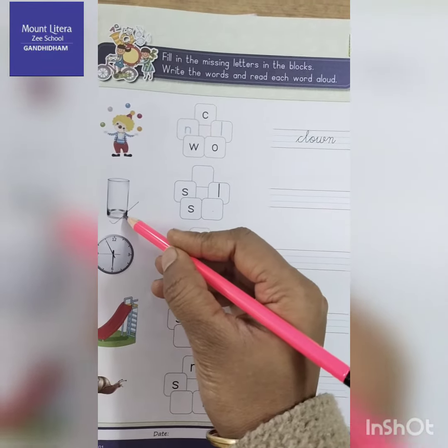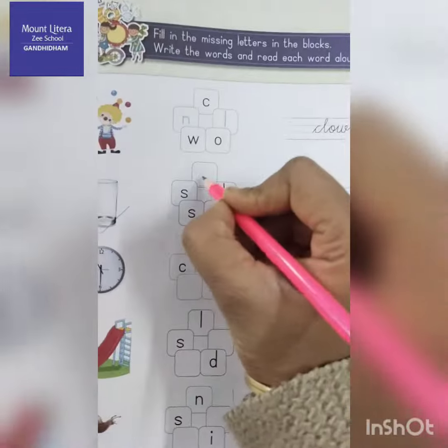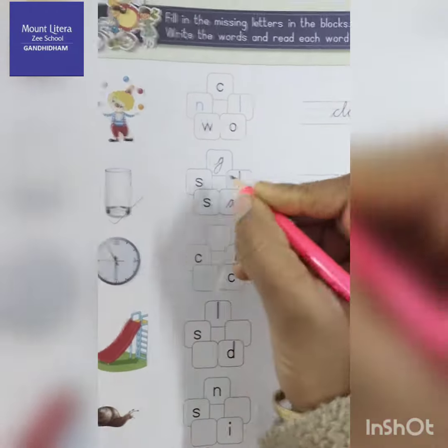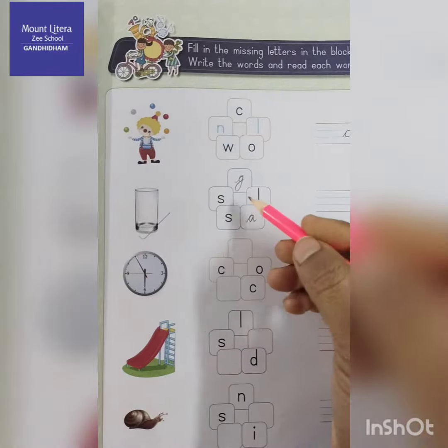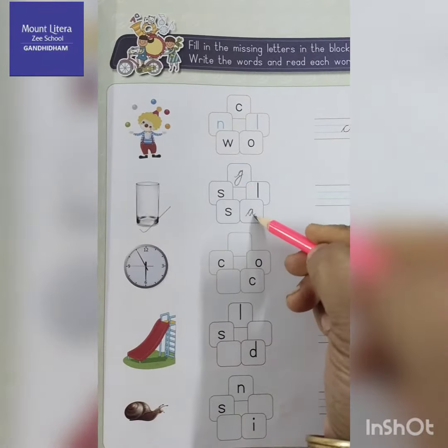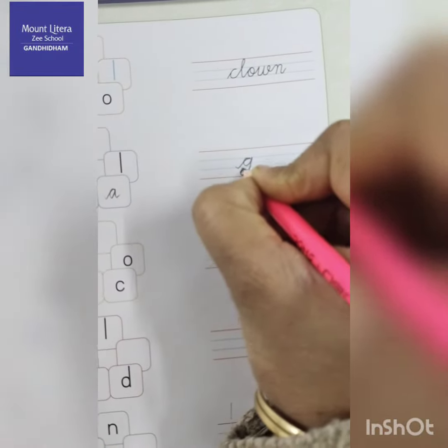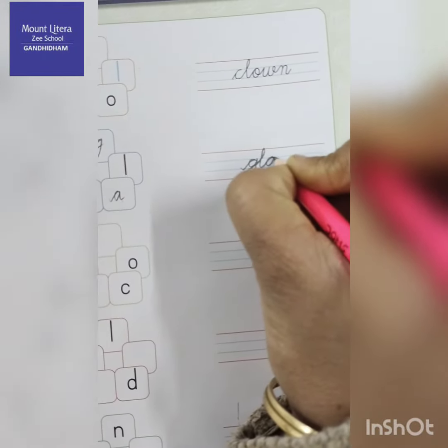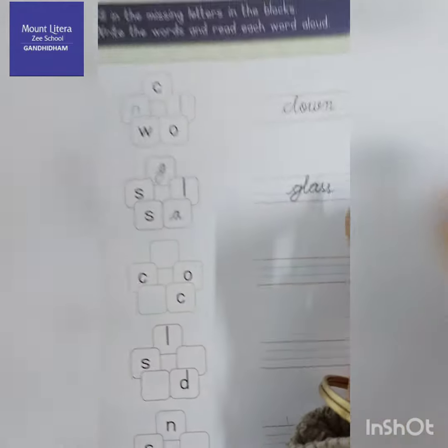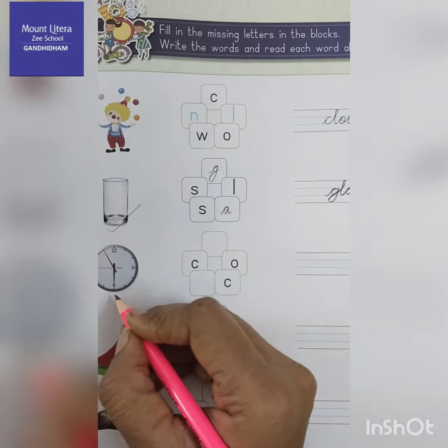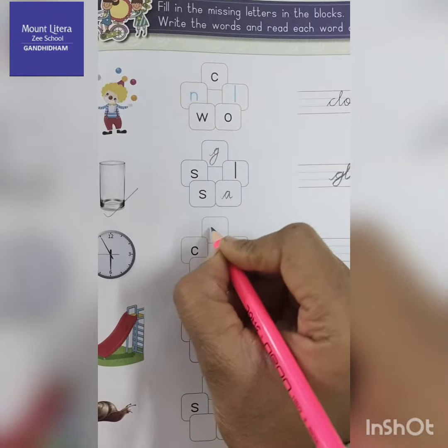The second one is glass. Glass. What is the spelling of glass? G-L-A double S. Glass. So we have to write here G-L-A-S-S. Glass.